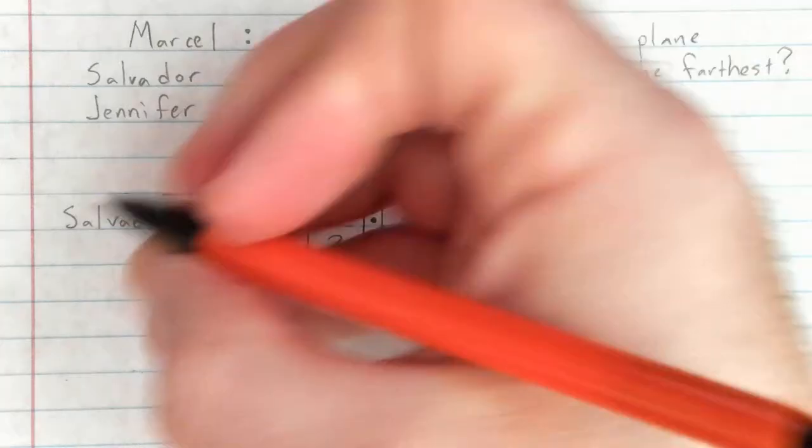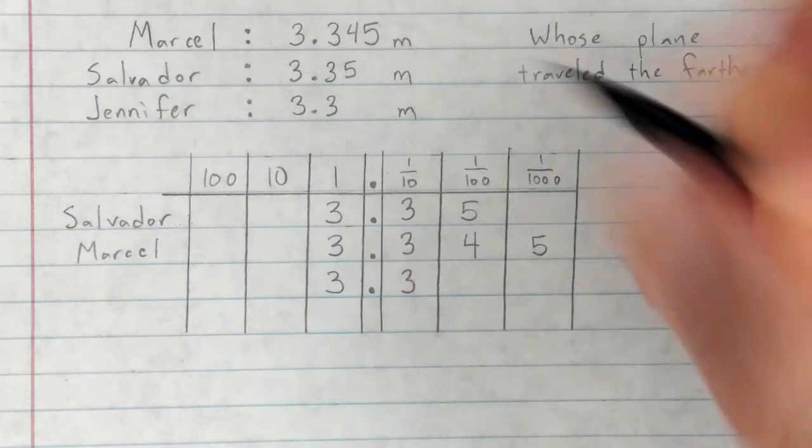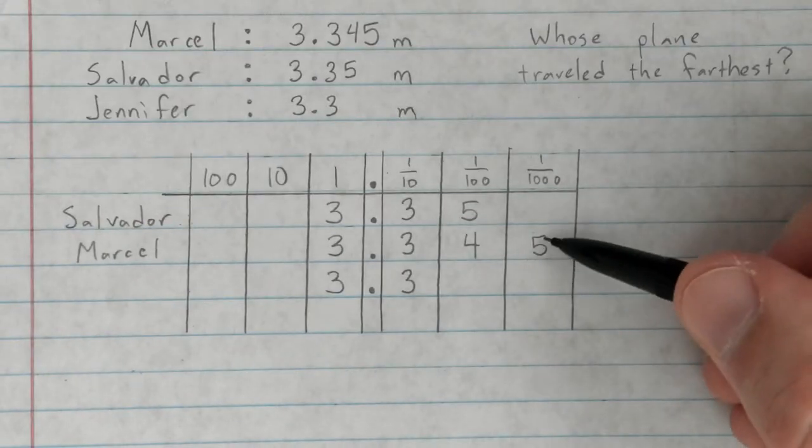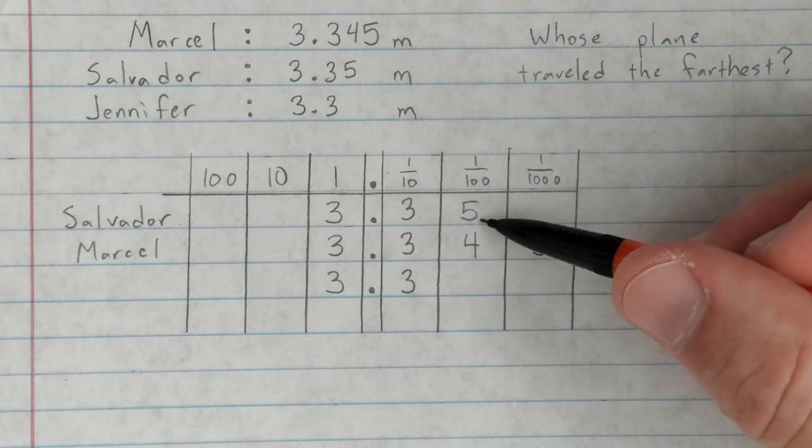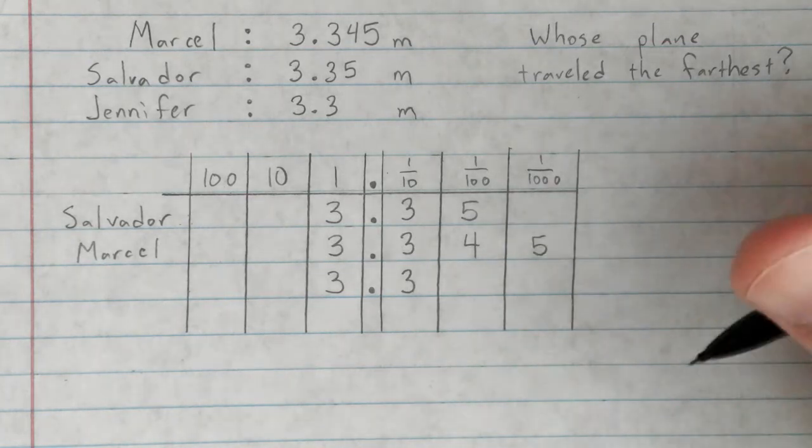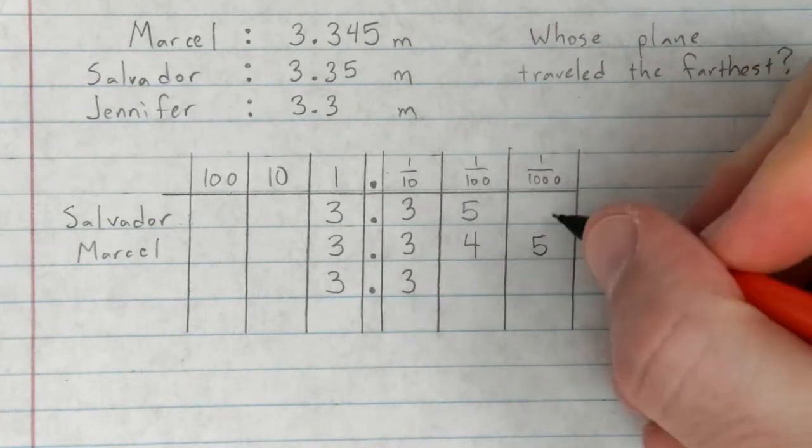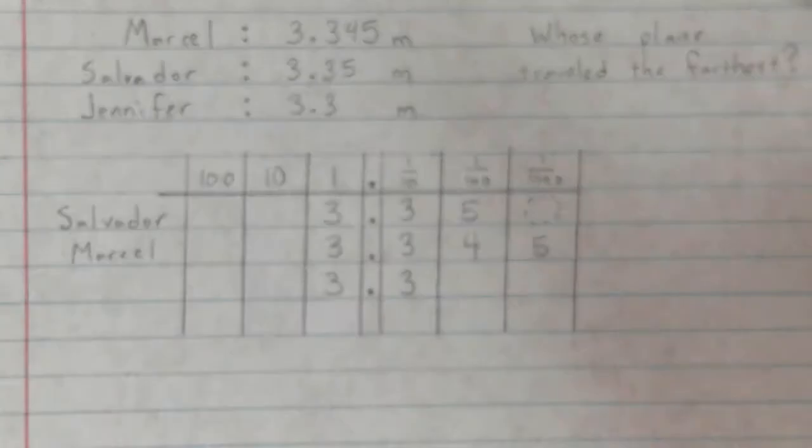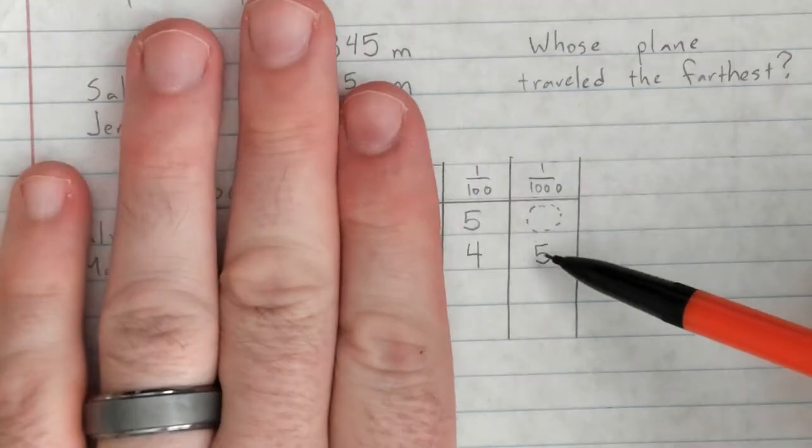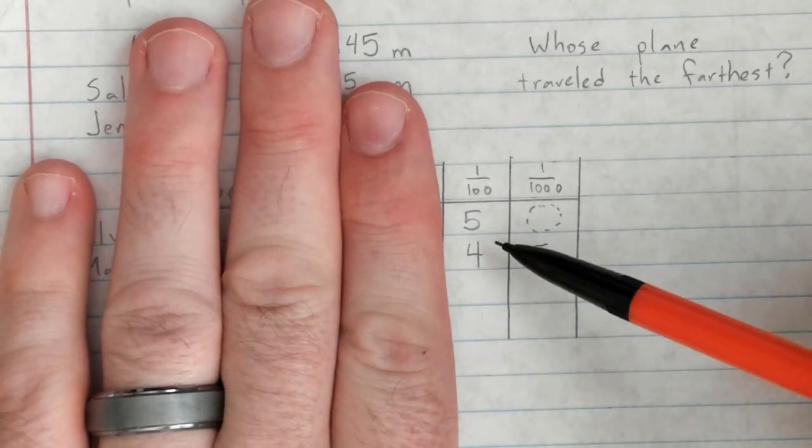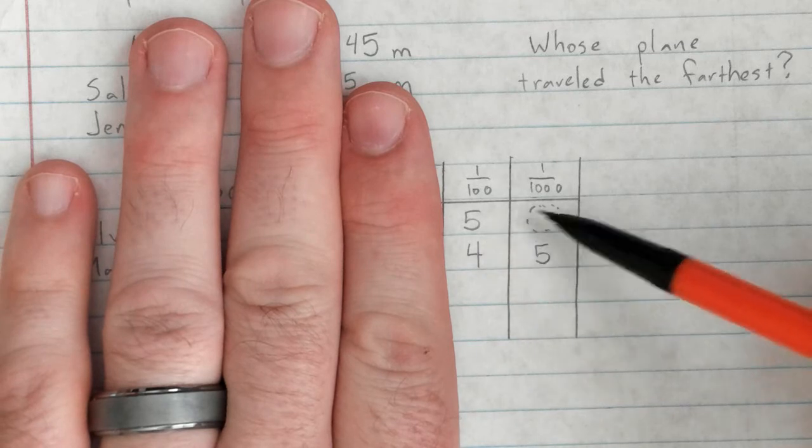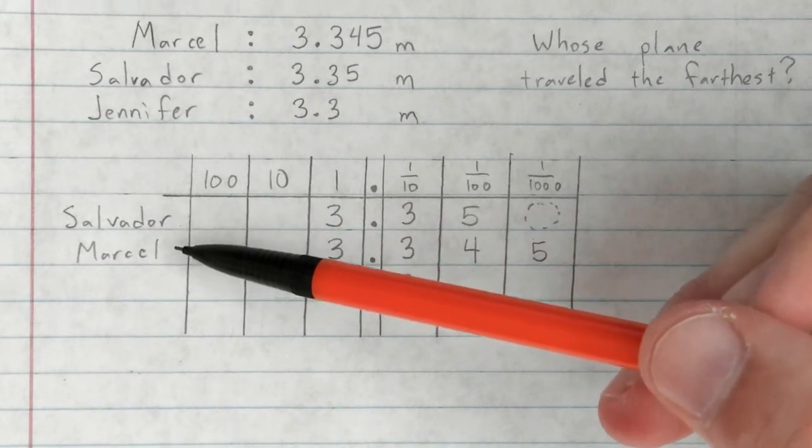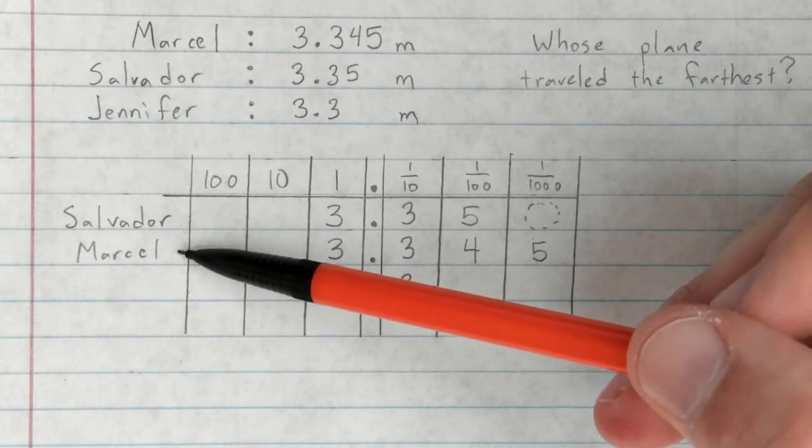So even though Marcel had a four and then another digit, it really doesn't matter because this five in the hundredths is greater than that four in the hundredths, which means Salvador is our winner. Now again, why isn't Marcel the winner? Marcel has a longer number, but Marcel's number, even though it's longer, this five thousandths is way smaller than that extra hundredth. This becomes more obvious if I put this invisible zero right. Salvador has a zero in the thousandths place.